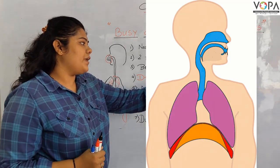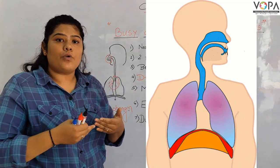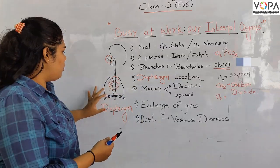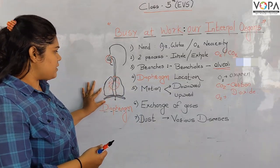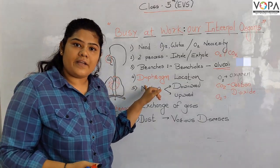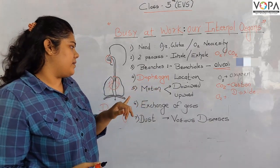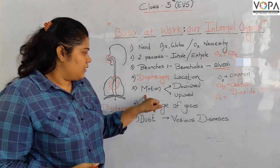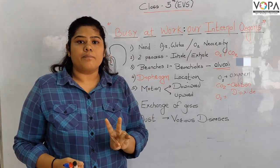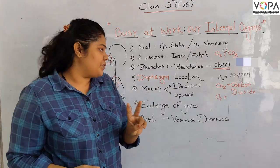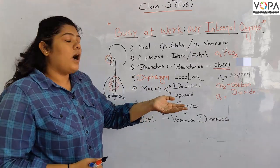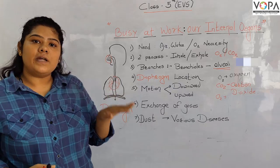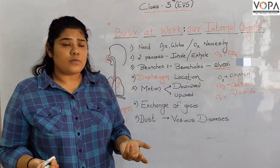The diaphragm is located between the thoracic cavity and abdominal cavity. How does the diaphragm move? The diaphragm has an upward and downward motion. These are the movements of the diaphragm during respiration.